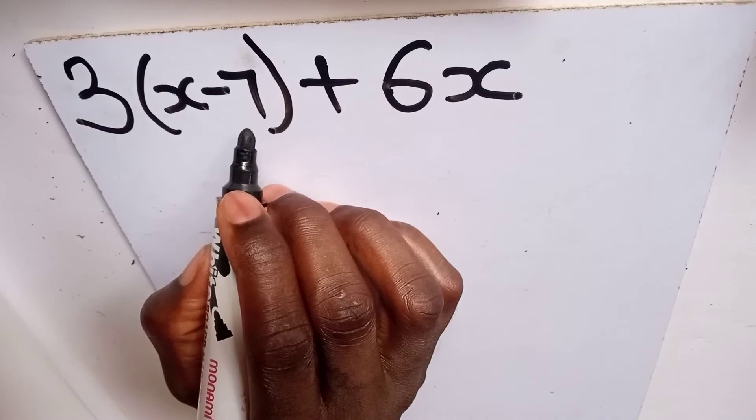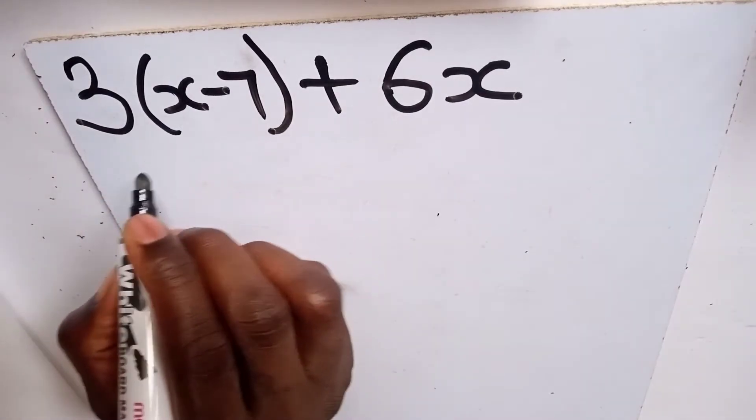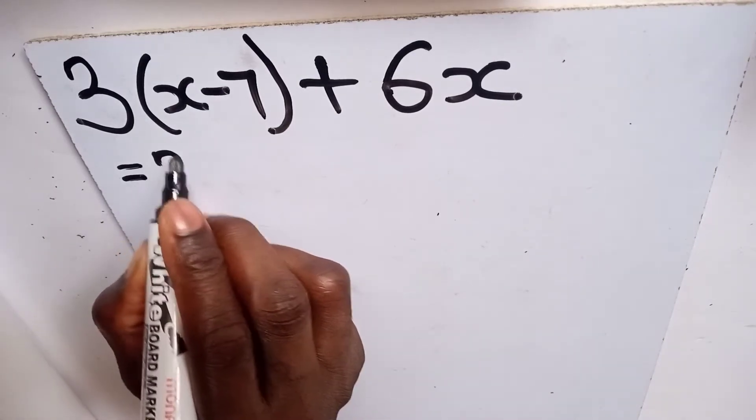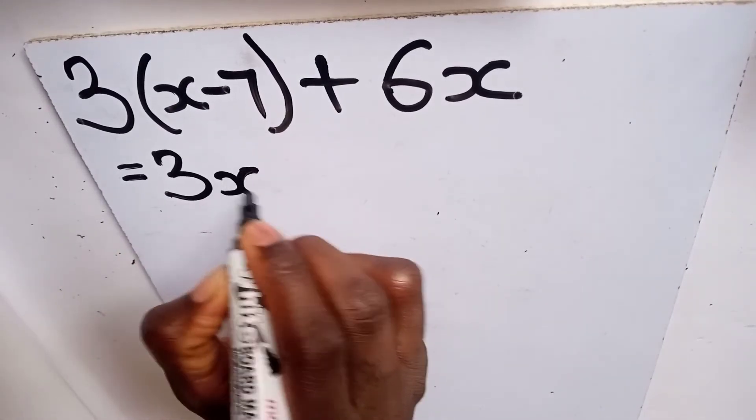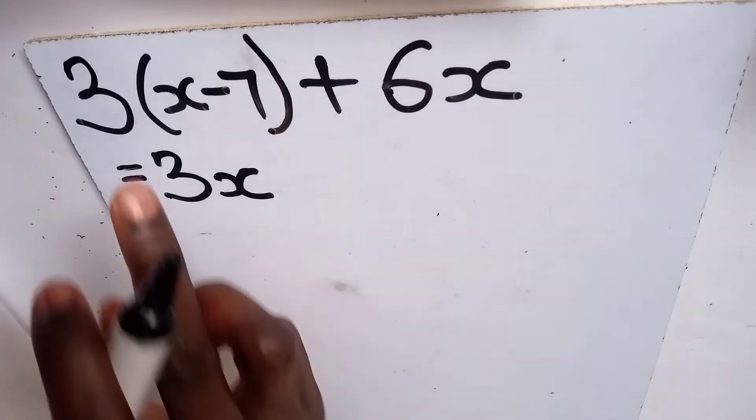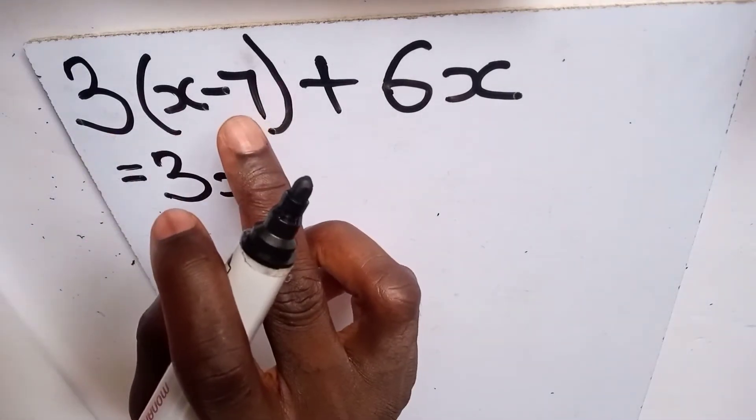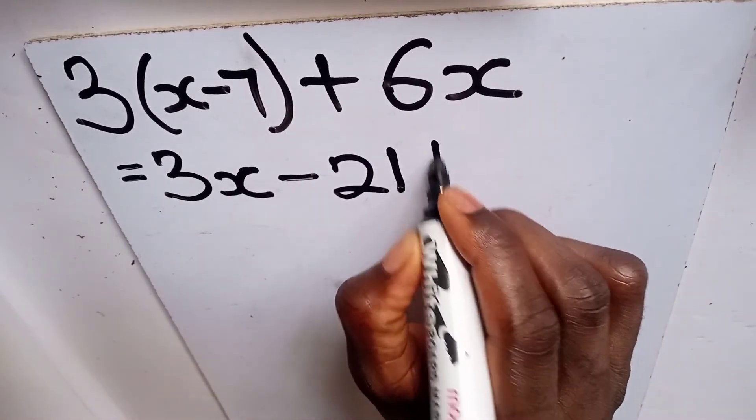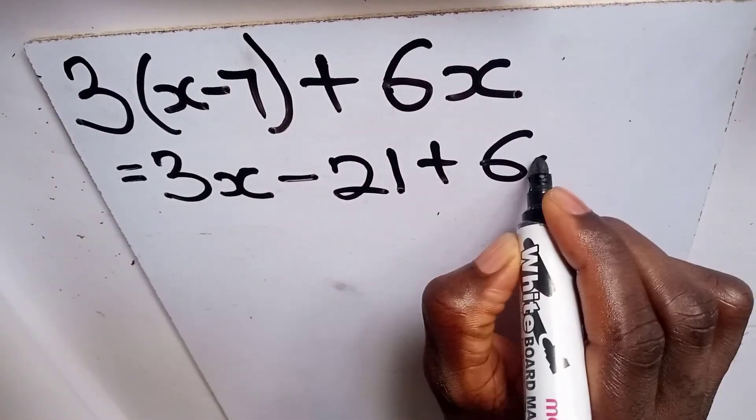Three multiplied by x gives us 3x, and then the same 3 multiplying the negative 7 gives us negative 21. Now we have our positive 6x also here.